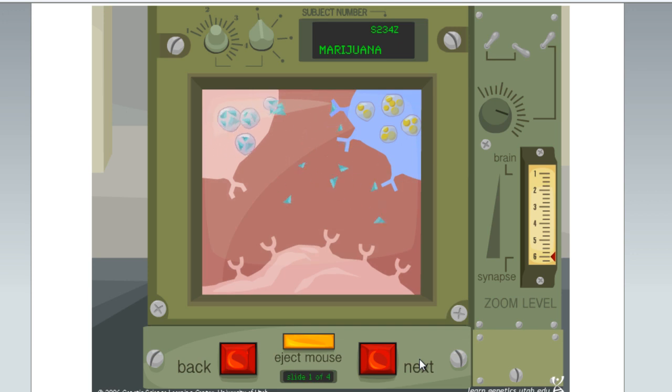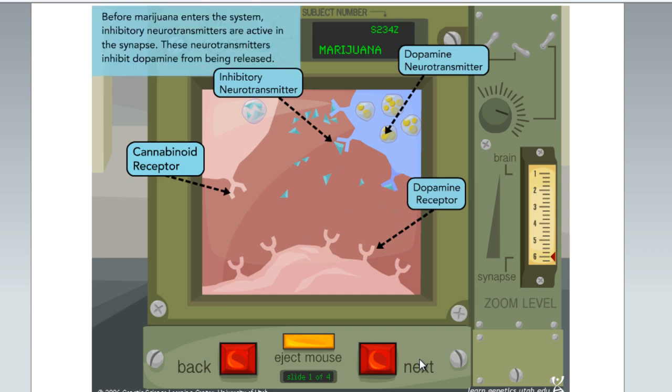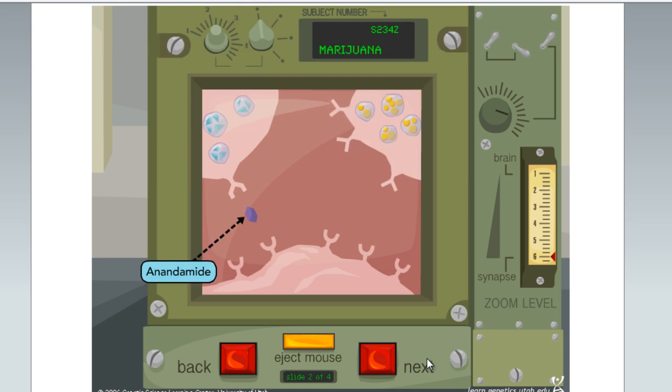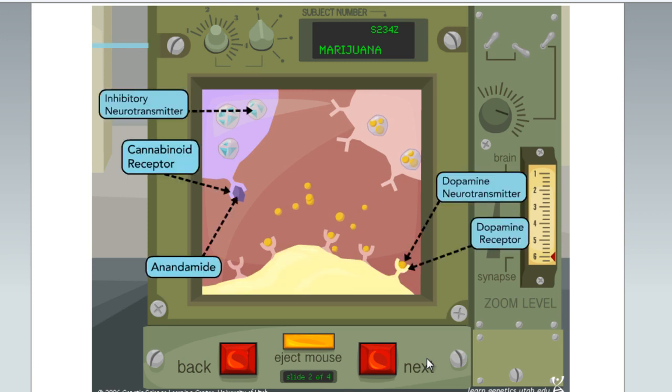Before marijuana enters the system, inhibitory neurotransmitters are active in the synapse. These neurotransmitters inhibit dopamine from being released. When activated by the body's own native cannabinoid, called anandamide, cannabinoid receptors turn off the release of inhibitory neurotransmitters. Without inhibition, dopamine can be released.